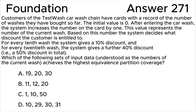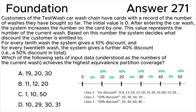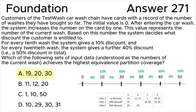The most important thing is to determine the equivalence partitions correctly. There are three classes of partitions: P1 is no discount, P2 is 10% discount, P3 is 50% discount. The correct answer is A. 19 covers the no discount partition, 20 covers the 50% discount partition, and 30 covers the 10% discount partition. These three values cover all three valid equivalence partitions.